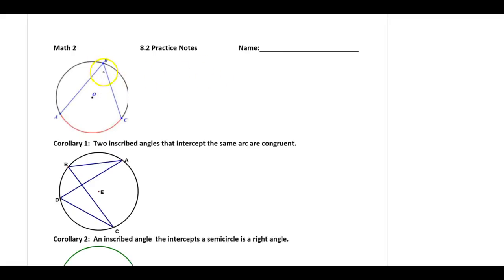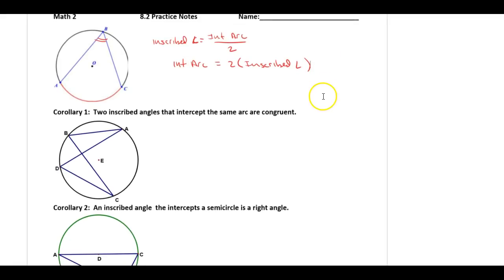Quick review: If we have an inscribed angle, we take the intercepted arc and divide it by 2 to find the inscribed angle measure. If we're looking for the intercepted arc measure, we do 2 times the inscribed angle. Those are things we've already learned.